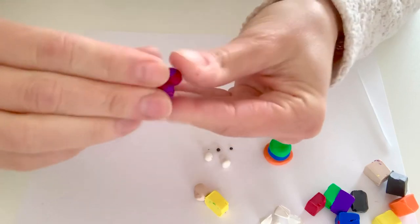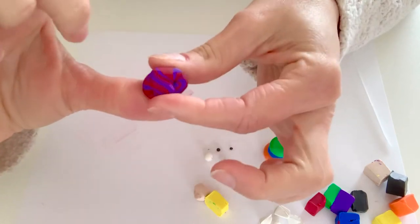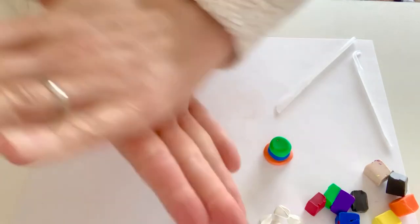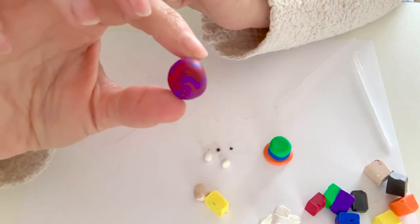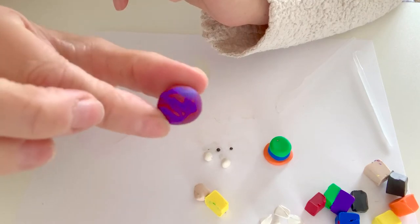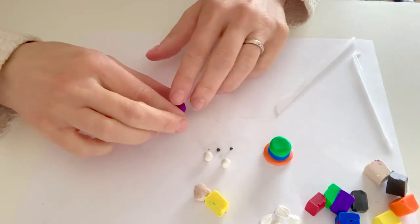And you can keep doing this as many times as you like until you get the amount of marbling that you want. I'm pretty happy with the way that looks right now. So I'm just going to fold it up into a ball, roll it between my hands. And there's my marbled purple and red.